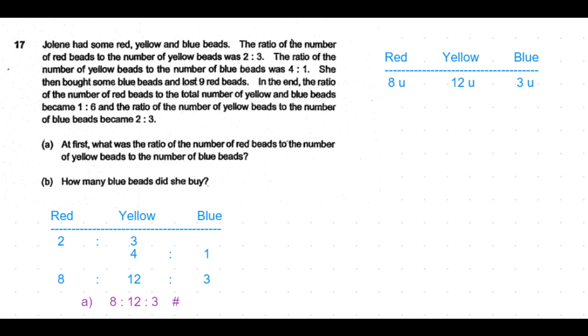Let's now solve part B of the question. The red to yellow to blue beads ratio was 8:12:3. So let us assume them to be 8 units, 12 units and 3 units respectively.